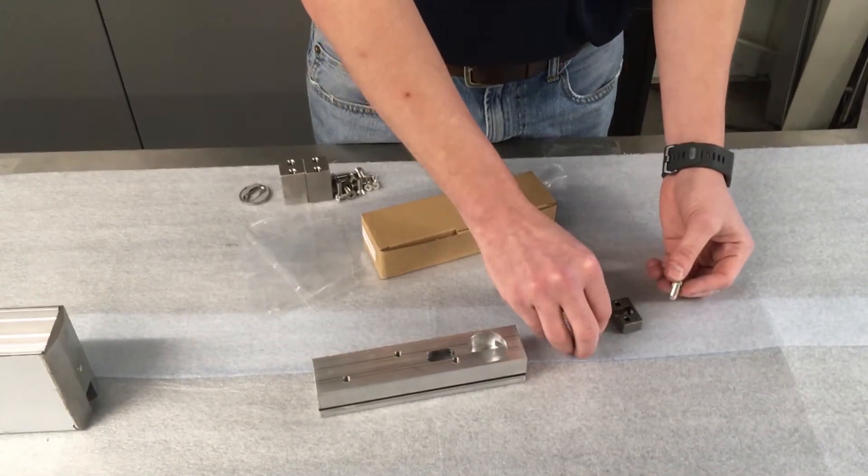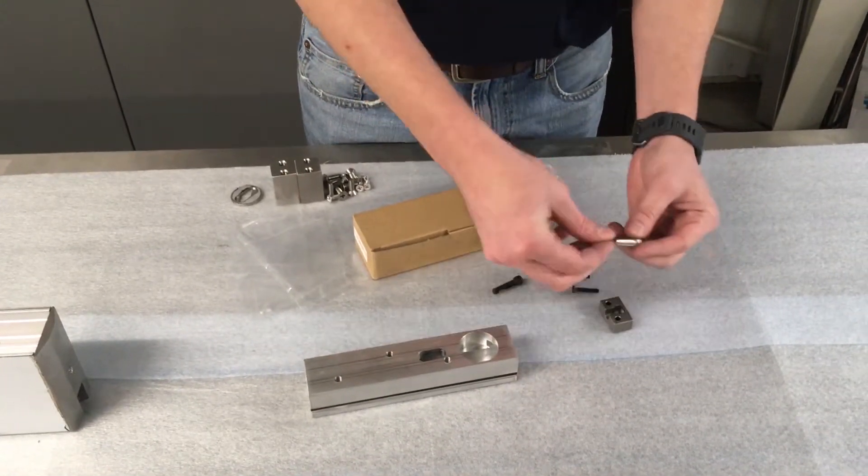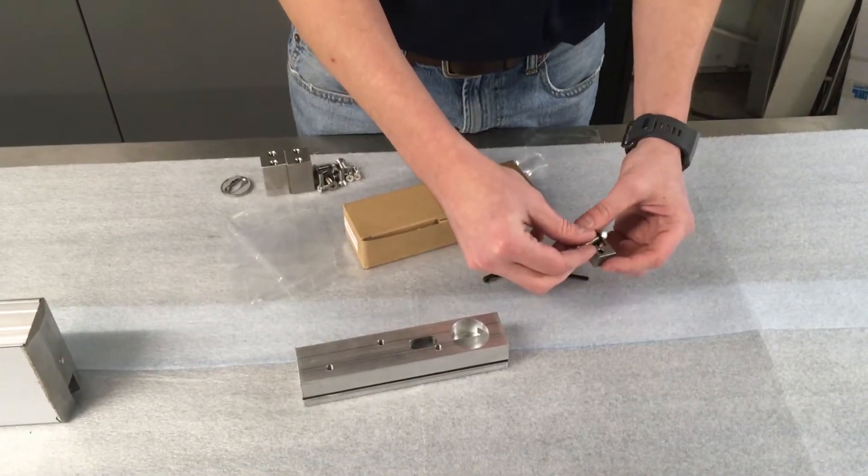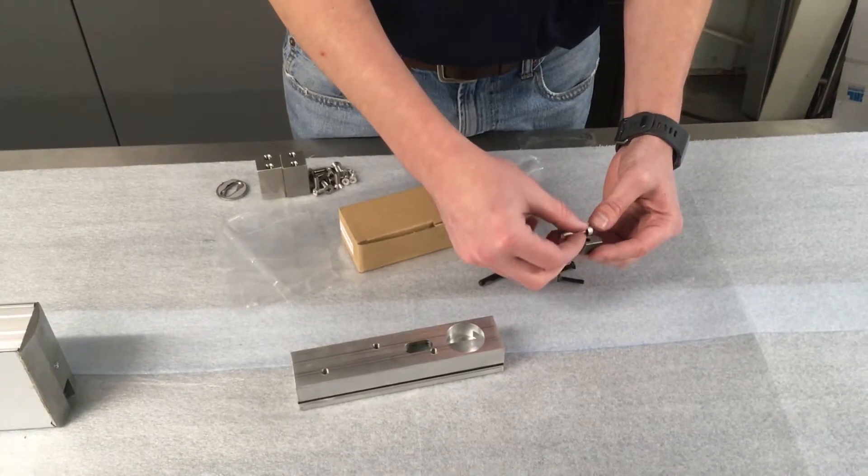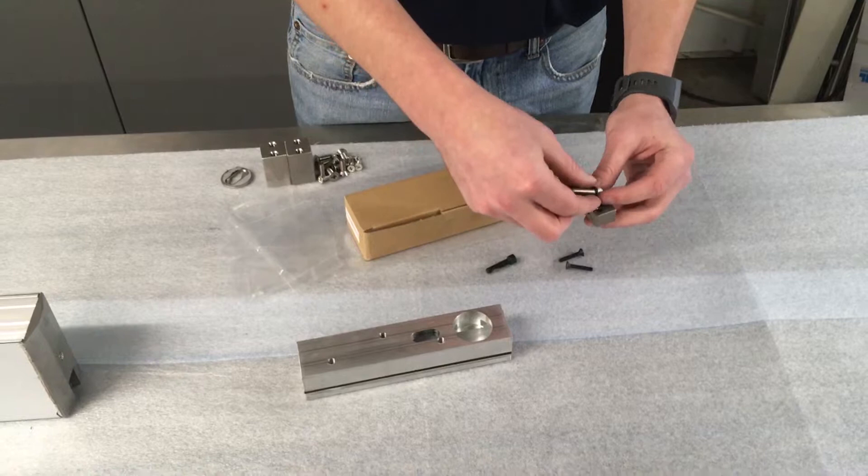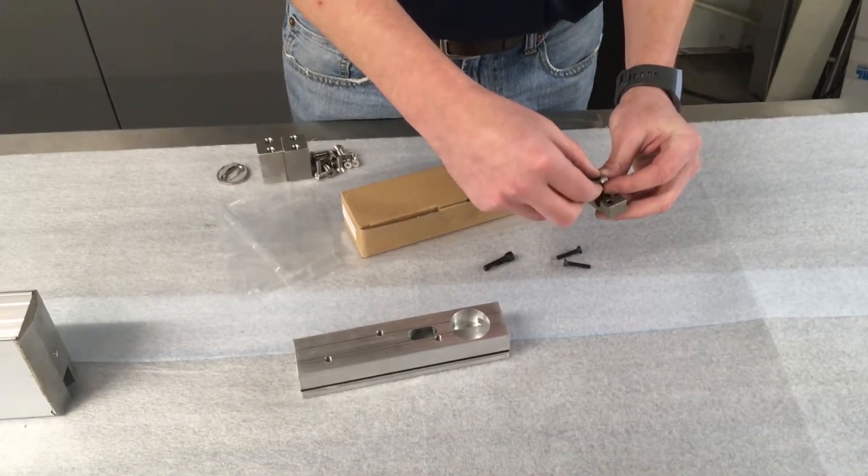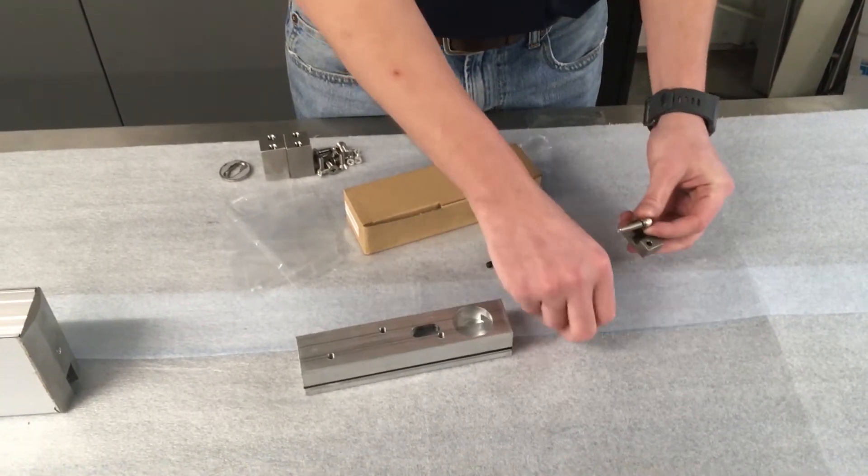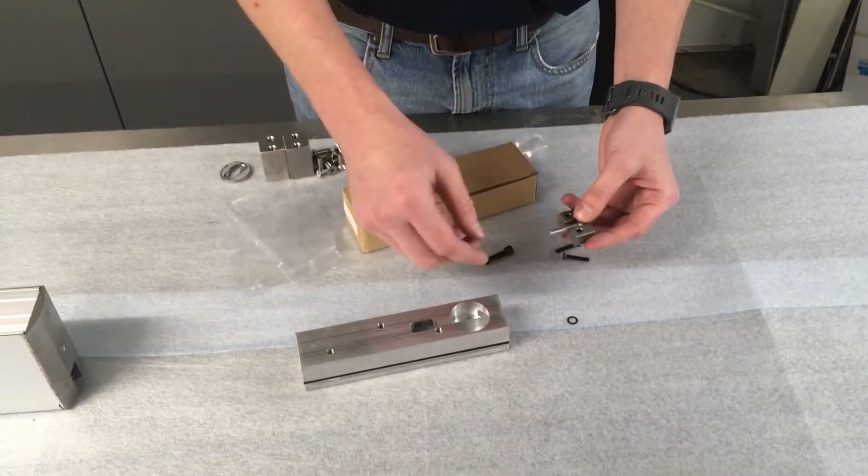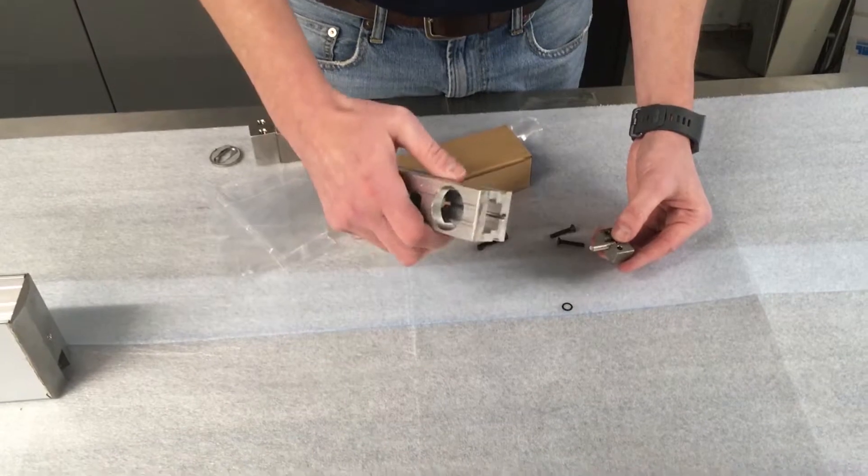we'll take the adjuster screw and two of the shim washers and then fit that into the adjuster block. If two washers does not work you can remove one and then just slide it in place.